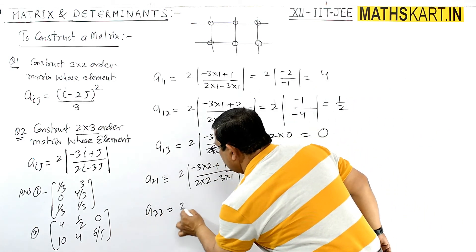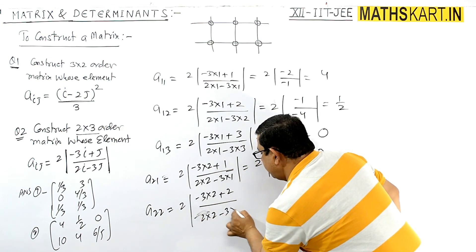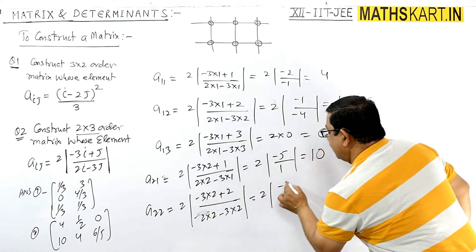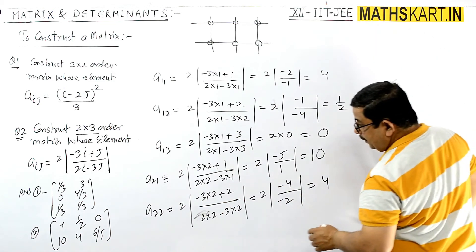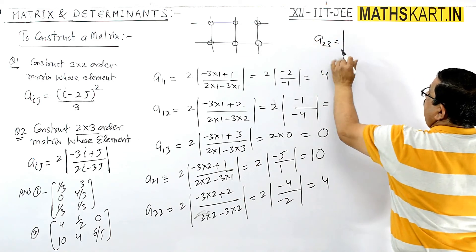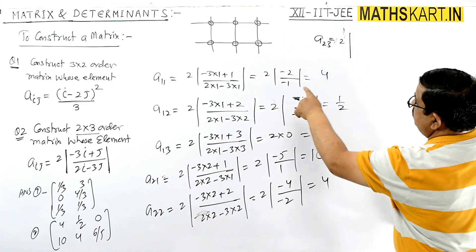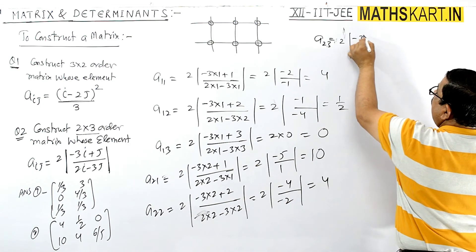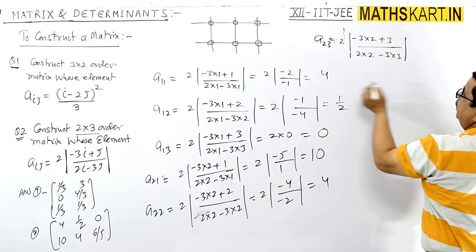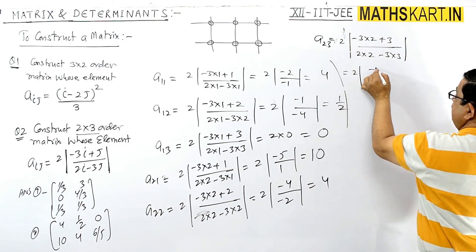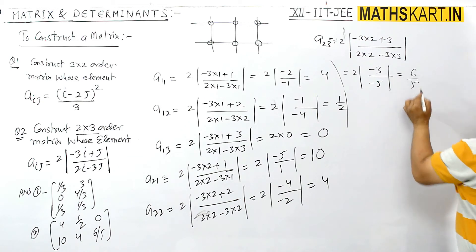A22: put i=2, j=2: 2 times of (minus 3×2 plus 2) divided by (2×2 minus 3×2). Solving: 2 × (−6+2) / (4−6) = 2 × (−4) / (−2) = 4. So A22 = 4. A23: put i=2, j=3: 2 times of (minus 3×2 plus 3) divided by (2×2 minus 3×3) = 2 × (−3) / (4−9) = 2 × (−3) / (−5) = 6/5. So A23 = 6/5.